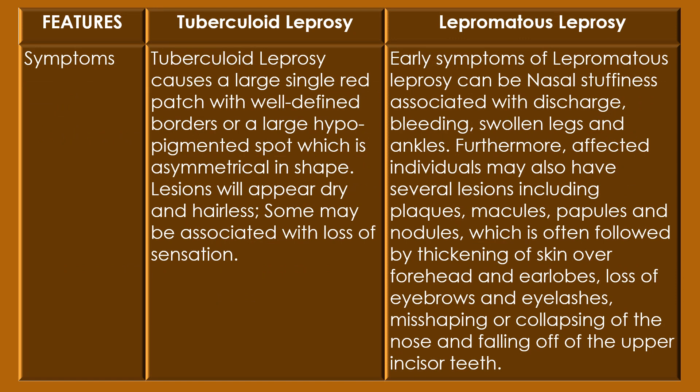Symptoms: Tuberculoid leprosy causes a large single red patch with well-defined borders or a large hyperpigmented spot which is asymmetrical in shape. Lesions appear dry and hairless and some may be associated with loss of sensation. In lepromatous leprosy, early symptoms can include nasal stuffiness with discharge, bleeding, and swollen legs and ankles. Affected individuals may also have several lesions including plaques, macules, papules and nodules, often followed by thickening of skin over the forehead and ear lobes, loss of eyebrows and eyelashes, misshaping or collapsing of the nose, and falling off of the upper incisor teeth.